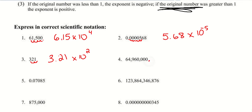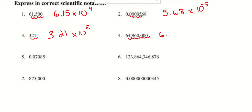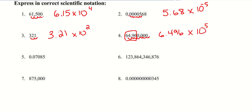For 64,960,000, the decimal point is at the end and we need to move it 7 spots. So we're going to put 6 point something. Usually the question might say round to the nearest hundredth, or it might ask for 3 significant figures. For instance, for this number, because there are more than 3 non-zero digits, we could write this as 6.496 times 10 to the 7th. Significant figures are non-zero numbers — the first non-zero number is the first significant figure. If there were a zero in front, the zero would not be significant. Since we don't have those directions, we'll leave it at 6.496 times 10 to the 7th.